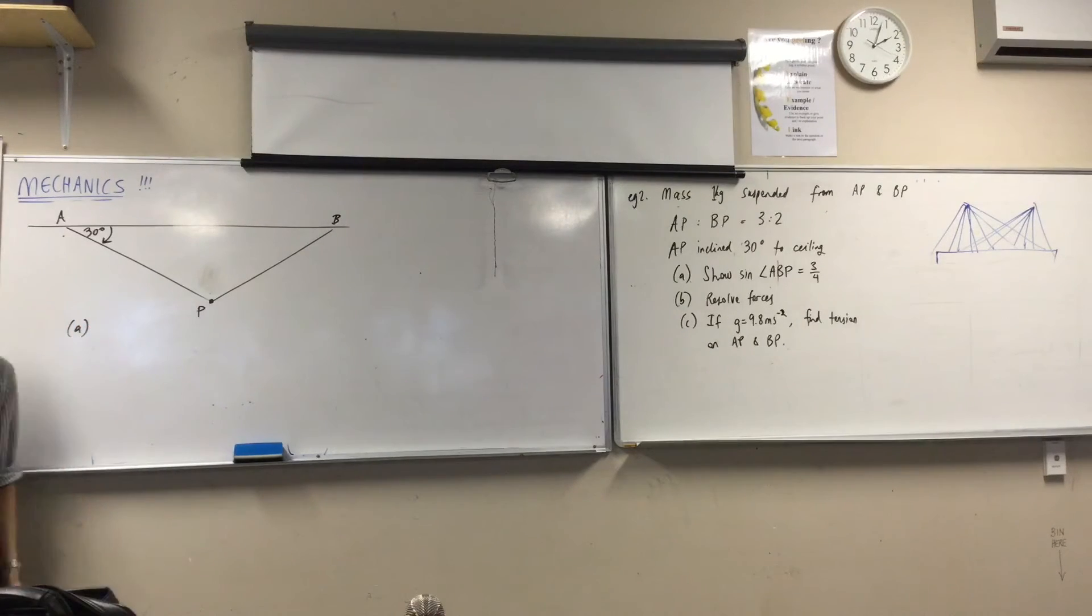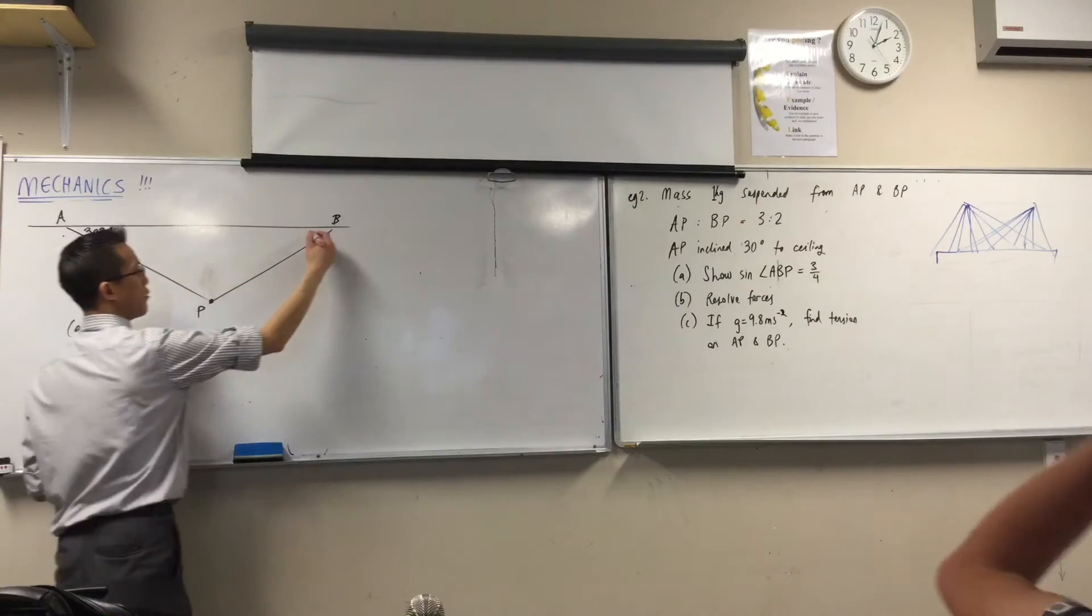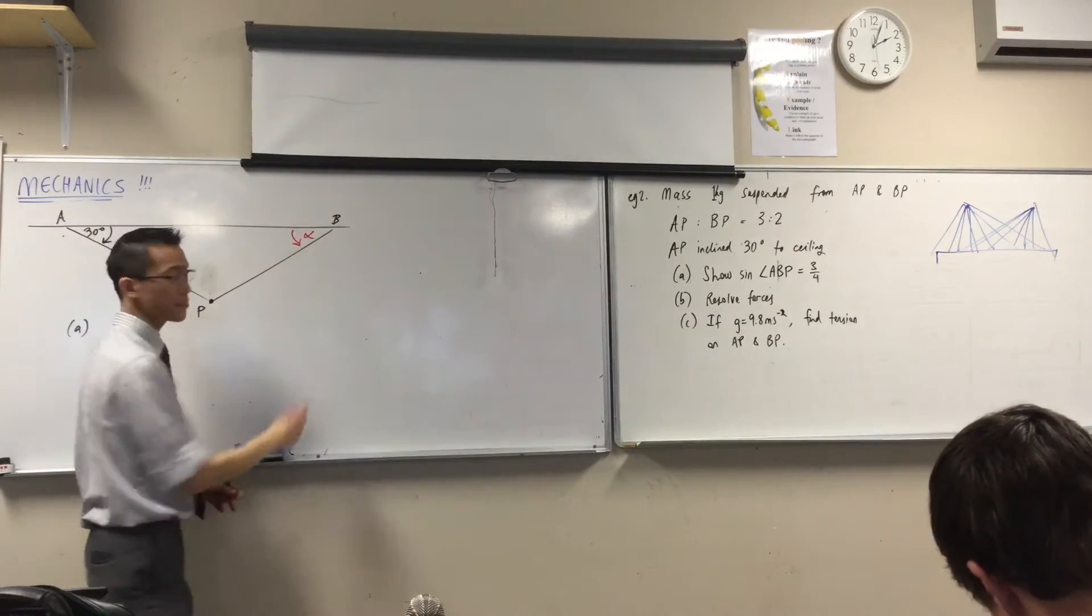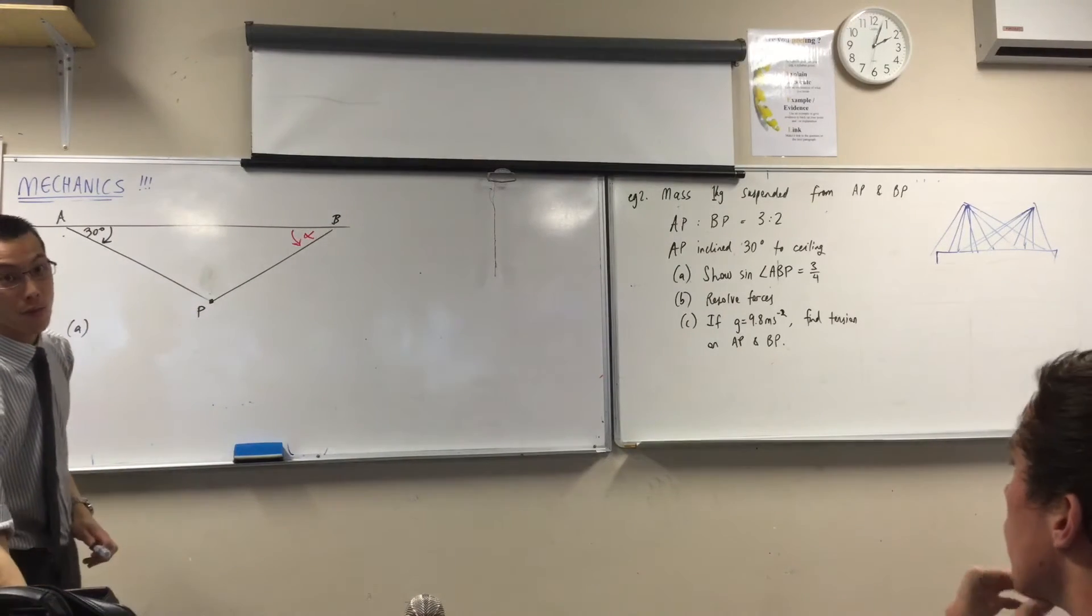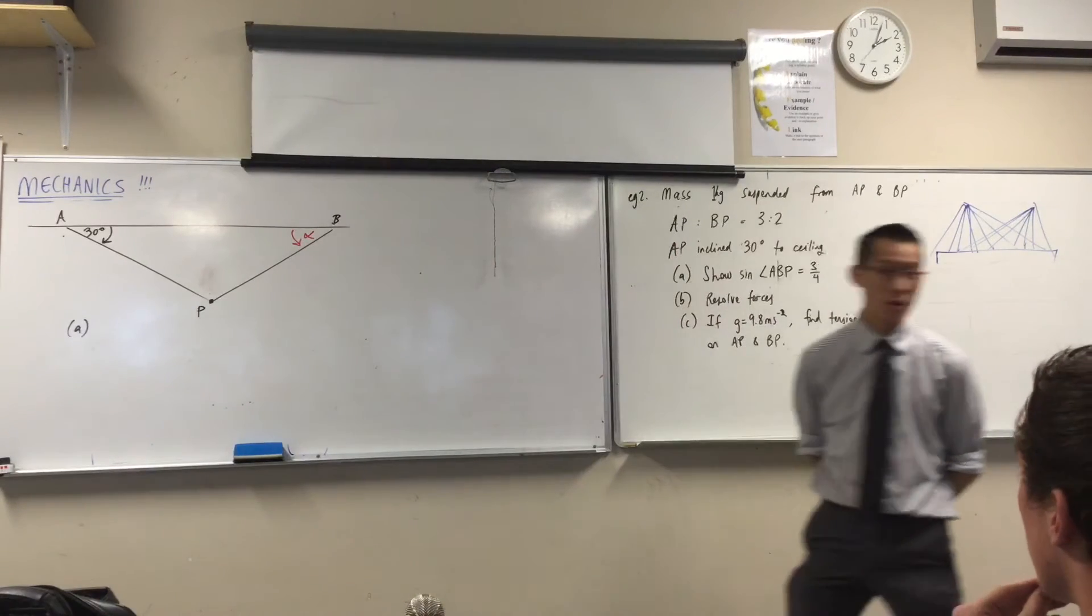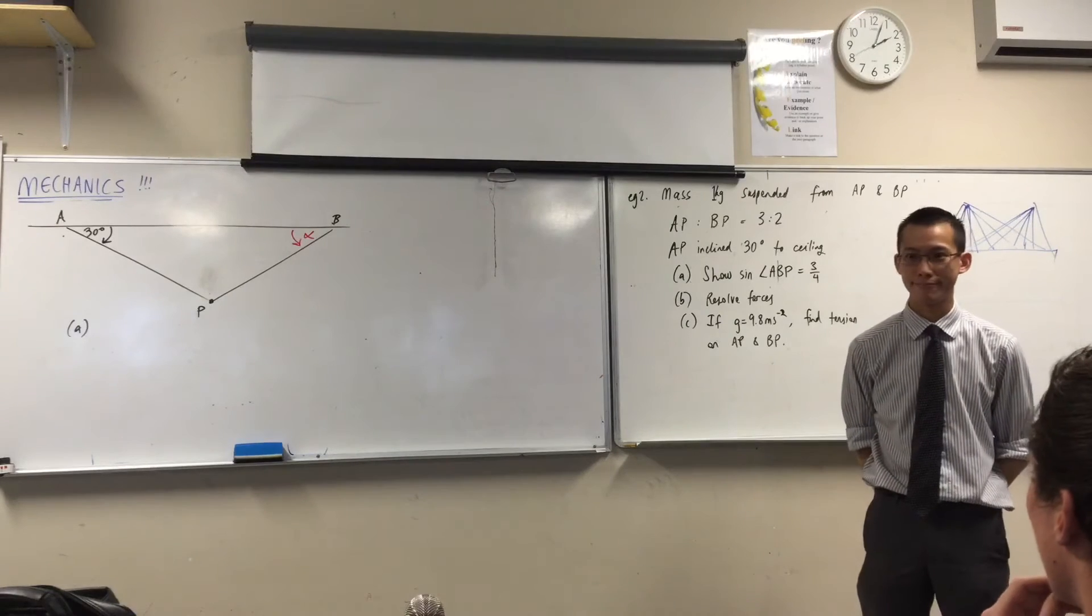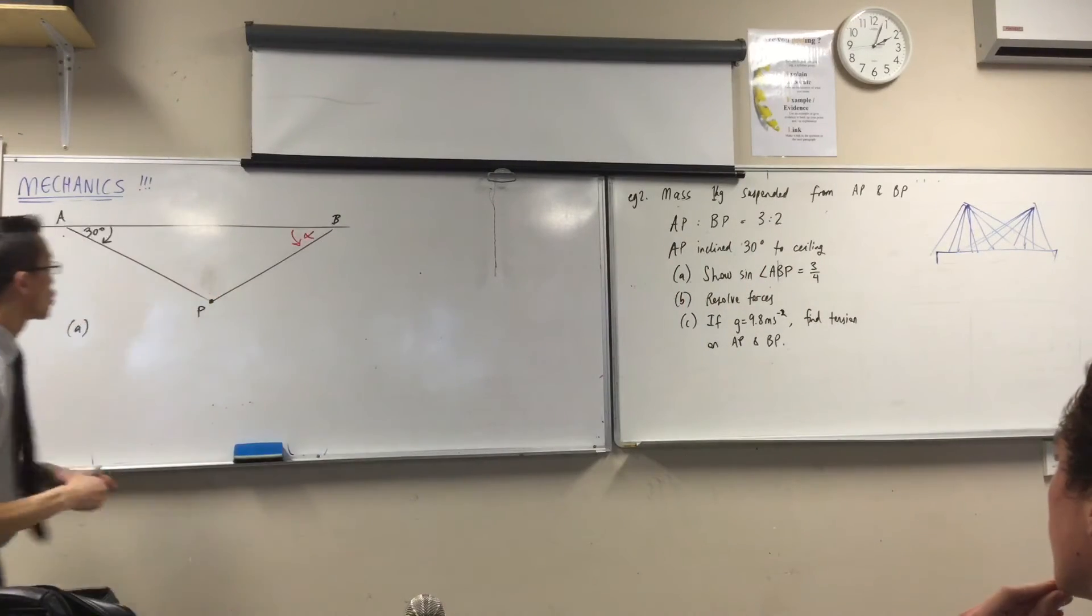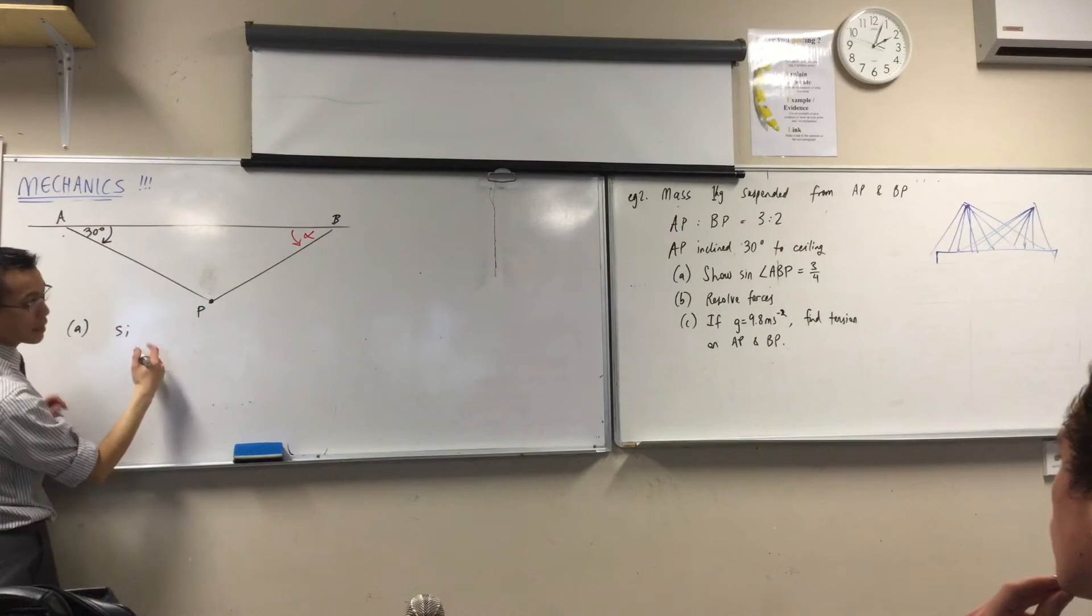All right, now, part A. Show that sine of this angle in here—now, in the question where I got this from, for convenience, they label this as alpha, so maybe you want to label it alpha as well. Show that sine of that angle, sine alpha, is 3 over 4. Okay, look, it's a triangle. They want us to deal with sine, so where does your mind link first? Sine angle, perfect. It's not right angled, so I don't really have that many choices. So, I'm going to go with sine alpha is what I'm trying to get, or sine ABP.